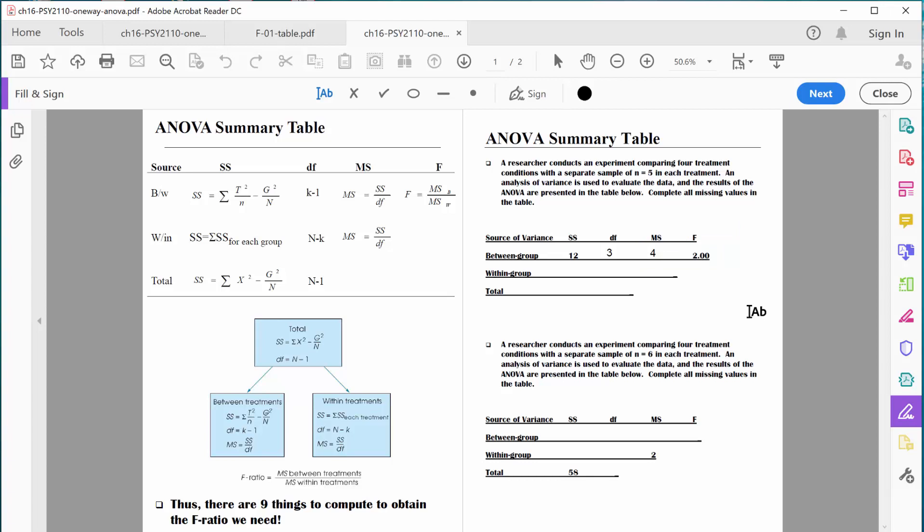Let's continue focusing on degrees of freedom because those are all very simple formulas. Degrees of freedom within groups says it's based on the number of people overall minus the number of groups. We determined there are 20 people overall. Four groups, five people in each group. So 20 people overall, which is N, minus four groups, which is K, would be 16 degrees of freedom within groups. Let's type that in.